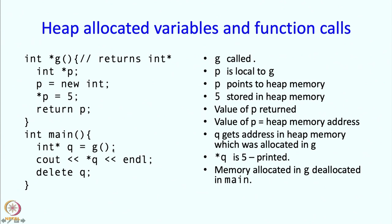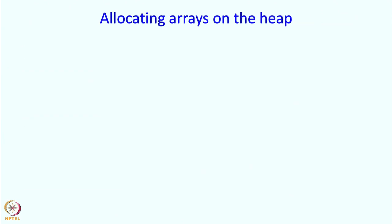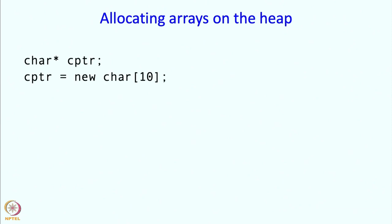Notice that something unusual is happening: some memory got allocated inside g and it stayed across the function call boundary. It was used in the main program and then deleted in the main program. This is clearly very different from the way memory allocation happens on the activation frames.